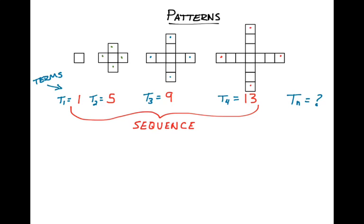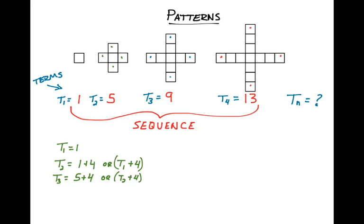To find those terms we have to look at the pattern. t₁ equals 1, and t₂ equals 1 plus 4, or t₁ plus 4. We can look at it either way because we're looking for how they're building on each other. Term 3, t₃, is going to be 5 plus 4, or t₂ plus 4. The same thing is happening in the shapes. And t₄ is going to be 9 plus 4, or t₃ plus 4.